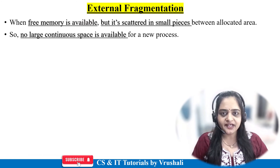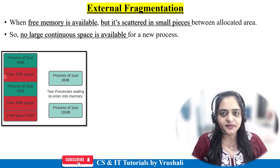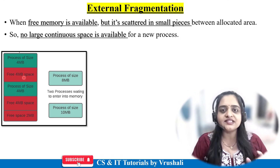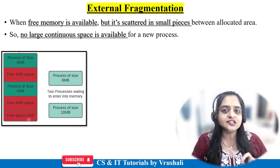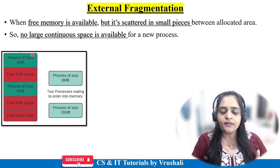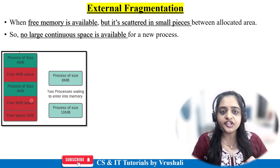Now what exactly is external fragmentation? Here in this diagram, this is a memory block in the operating system. 4MB plus 4MB — so 8MB is utilized space. Now 4MB, again 4MB, again 2MB — total 10MB is free space. A particular process is coming that requires 8MB of memory for execution. Continuously 8MB memory is not available — the 8MB is scattered into two parts like 4MB and 4MB. This scattered memory is called external fragmentation.